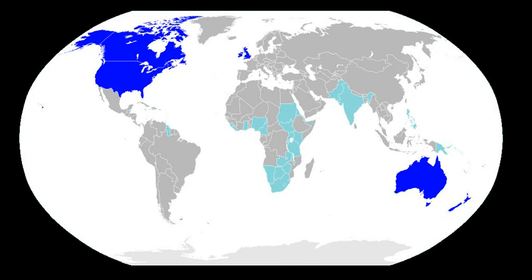Adjectives modify a noun by providing additional information about their reference. In English, adjectives come before the nouns they modify and after determiners. In modern English, adjectives are not inflected and they do not agree in form with the noun they modify, as adjectives in most other Indo-European languages do. Some adjectives are inflected for degree of comparison, with the positive degree unmarked, the suffix -er marking the comparative, and -est marking the superlative. Other adjectives have comparatives formed by periphrastic constructions, with the adverb 'more' marking the comparative and 'most' marking the superlative.